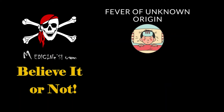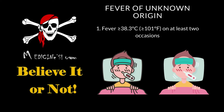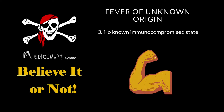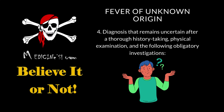Fever of unknown origin is defined as a condition that satisfies the following criteria: 1. Fever greater than or equal to 38.3 degrees Celsius or greater than or equal to 101 degrees Fahrenheit on at least two occasions. 2. Illness duration of greater than or equal to 3 weeks. 3. No known immunocompromised state. 4. Diagnosis that remains uncertain after a thorough history taking, physical examination, and the following obligatory investigations.